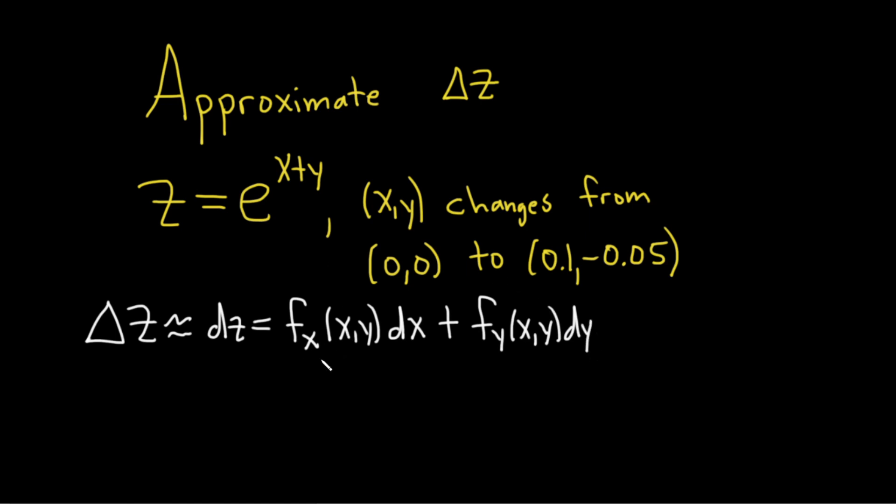So before we do this problem let's go ahead and find the partials. Let's find the partial of f with respect to x. So in this problem, this is our f. And when we're finding partials with respect to x, we treat all of the other variables as constants. So all of the y's are constants.